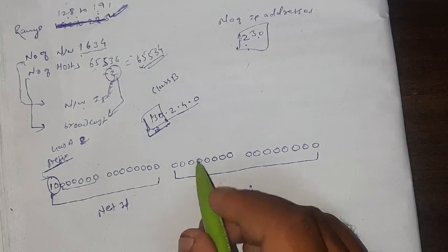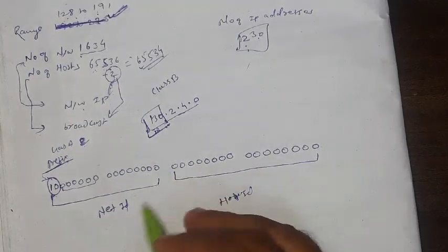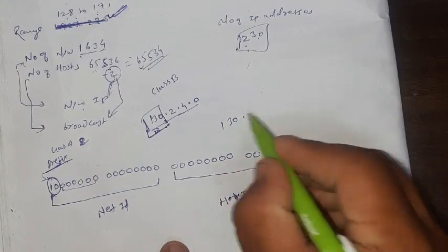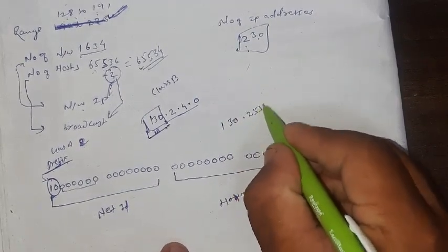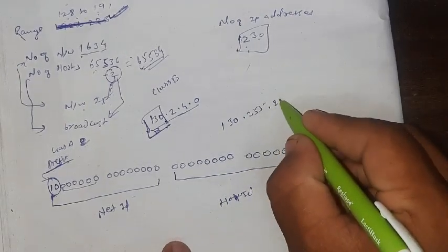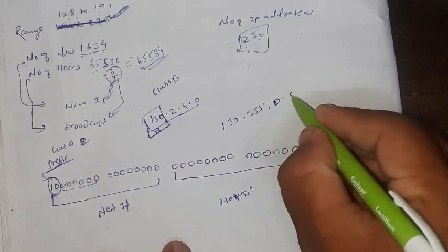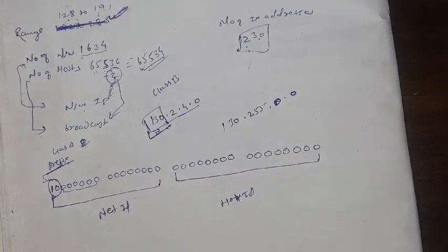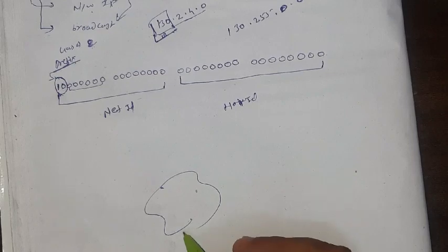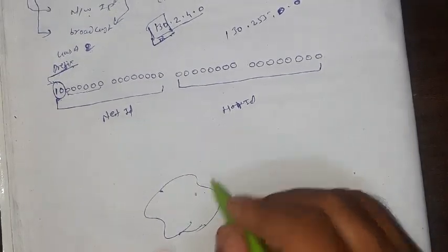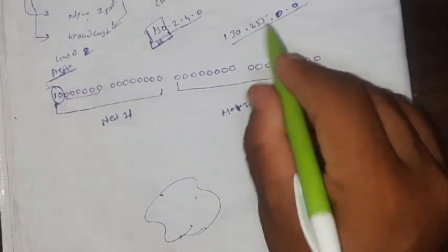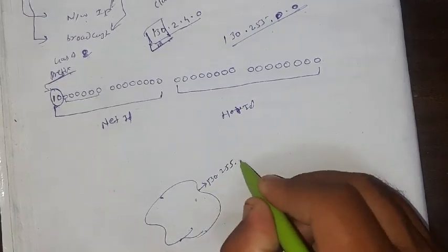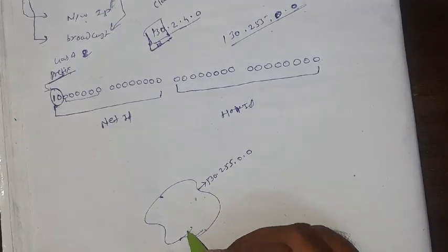Now here, suppose the first IP address from this Class B, it may be suppose 130.255.2... sorry, first IP address, it should start from 0. So here, this is the first IP address from this network. Suppose we are having a network of our college or any company. So the first IP address means this. This IP address cannot be due to any host. Why? Because this IP address belongs to this network. The first IP address is used for that network, not for the host of that network.